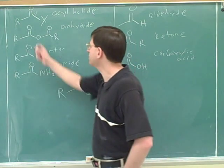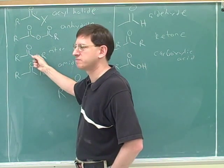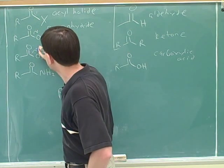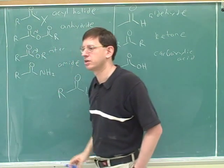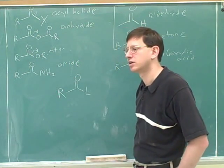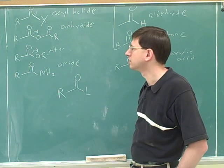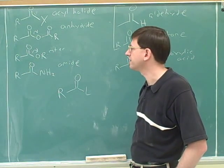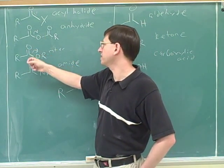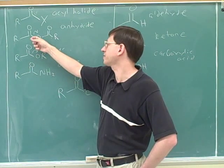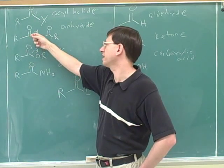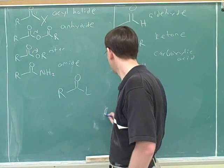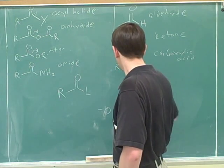Both anhydrides and esters have an oxygen leaving group. So why is the anhydride's leaving group better than the ester's? If in both cases we'd be putting a negative charge on the oxygen when it leaves, why would the anhydride be a better leaving group? Because the anhydride's resonance still works.